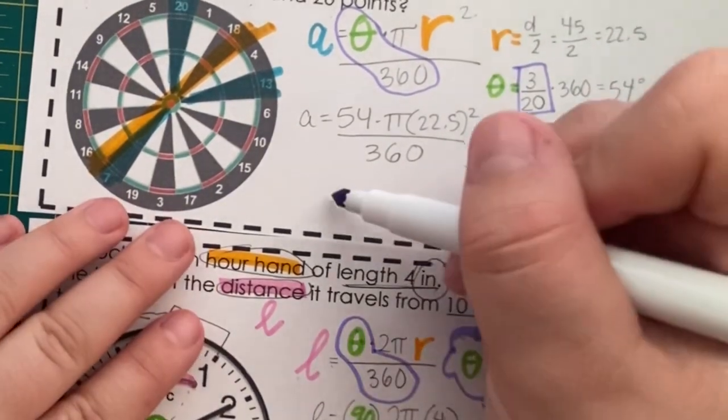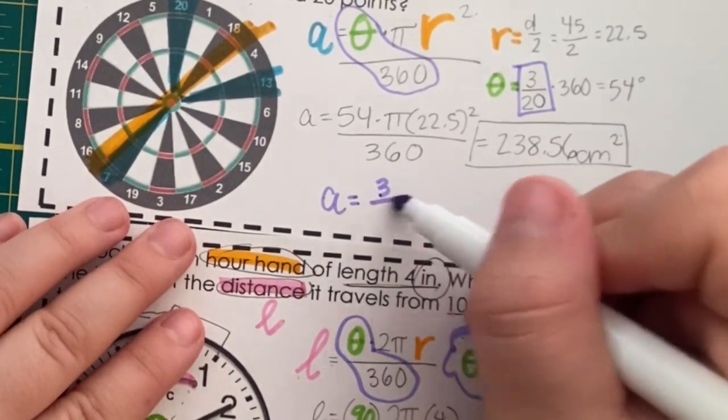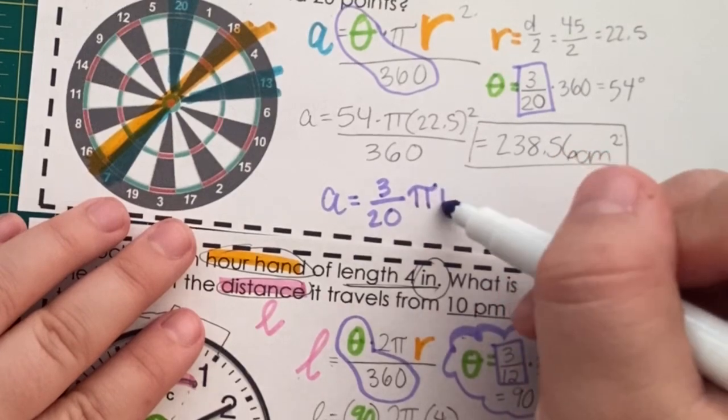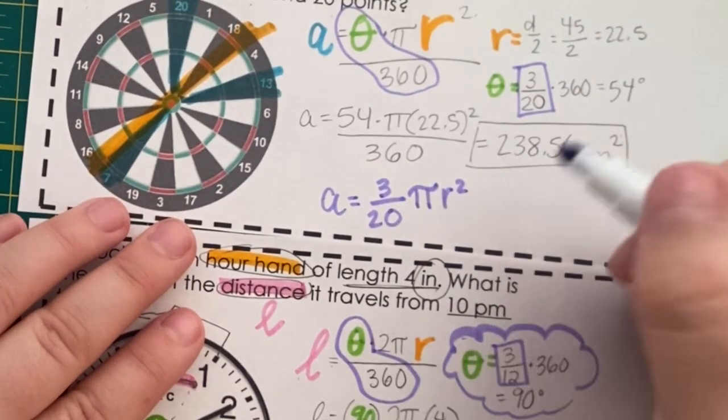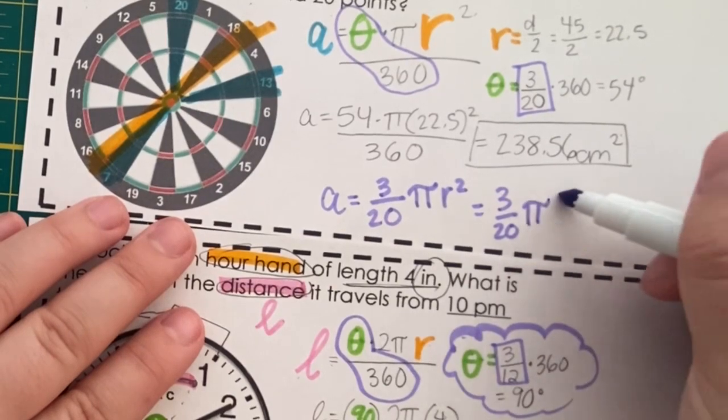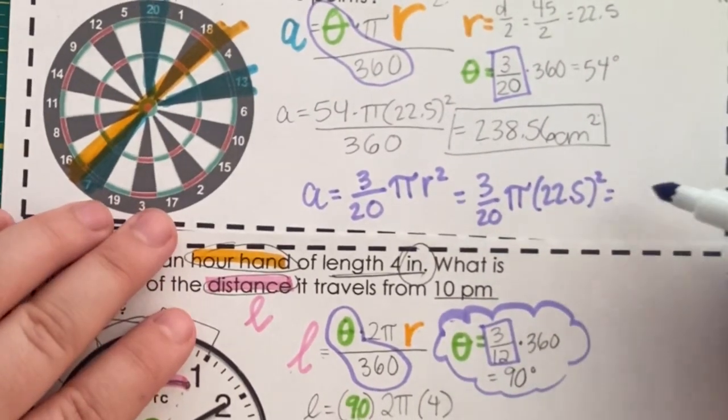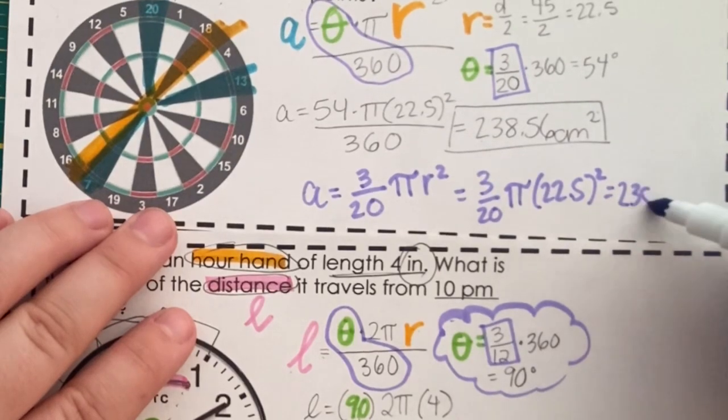So, if you want a shortcut here, the area would be 3/20 of the area of the circle. It would be 3 over 20, pi times 22.5 squared. And you would receive the same answer.